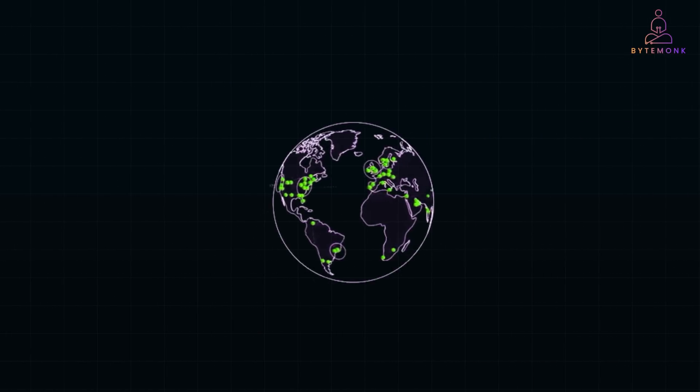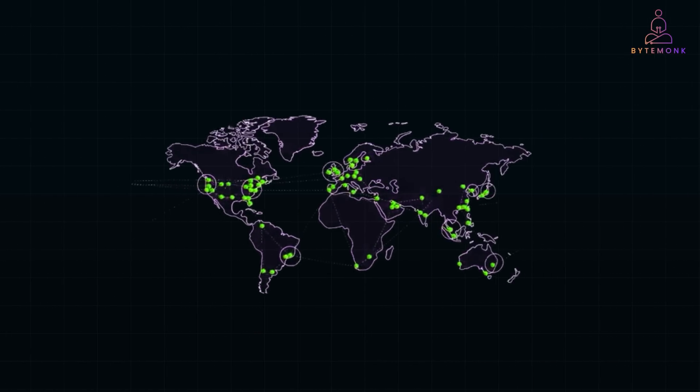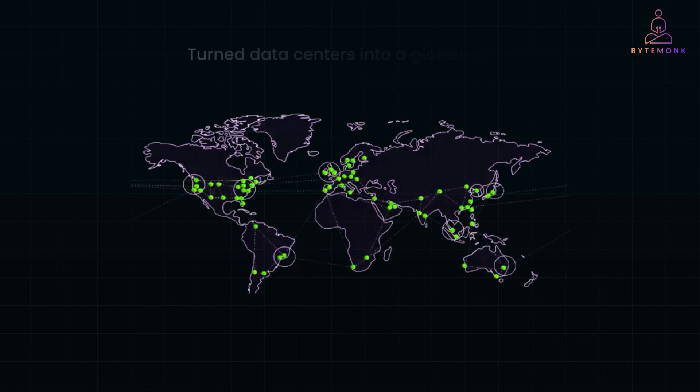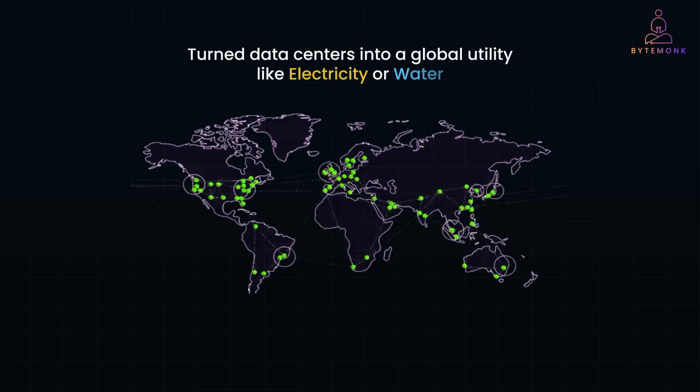All the cloud providers have their own global network of data centers. They have in fact turned data centers into global utility, like electricity or water. These massive facilities are strategically located around the world to ensure high availability, redundancy, and low latency access to their cloud services, allowing users to rent virtual resources instead of setting up their own infrastructure.